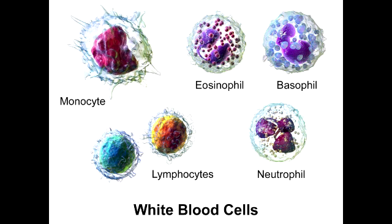Leukocytes can be divided into two categories. One is the granulocytes, which contain a lot of granules and have a lobed nucleus, and the second category is the mononuclear cells. The granulocytes include neutrophils, eosinophils, and basophils, whereas the mononuclear cells include the monocytes and the lymphocytes.